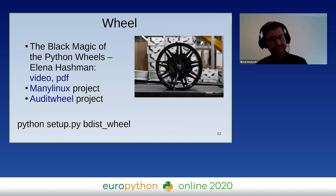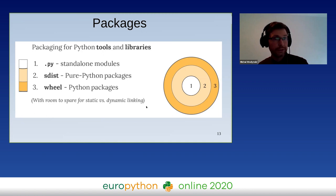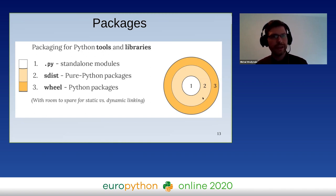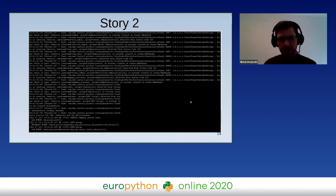That's the end of the first section. In summary: at the most basic layer we have standalone modules which are Python files. If we have more Python files we can have a source distribution, and if we compile that we get a wheel for a certain platform. This is the summary of the packages, and now we can switch to virtual environments.